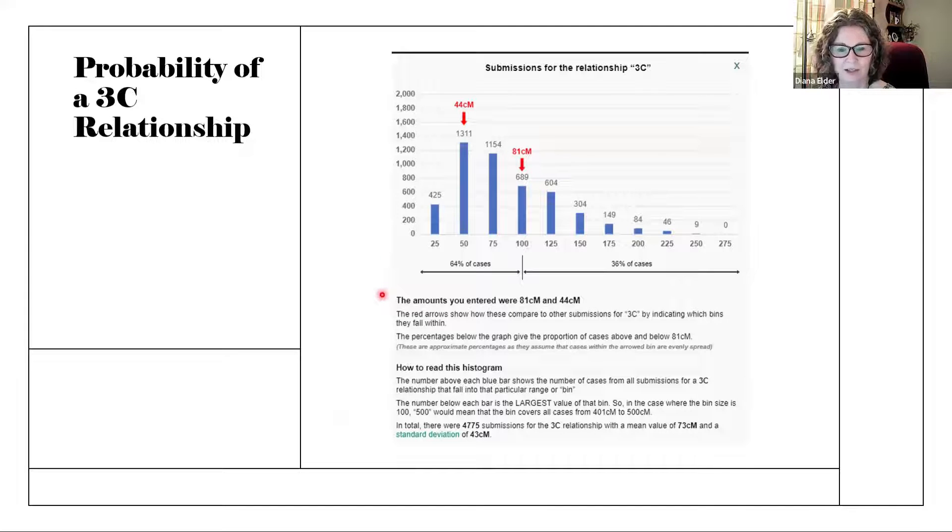It says here, the amounts you entered were 81 centimorgans and 44. And the red arrows show how these compare to other submissions for third cousin by indicating which bins they fall within. So each one of these is a bin. For instance, 0 to 25 would be shown here. 25 to 50 is shown here. 50 to 75 is here. 75 to 100 is here. And so forth. And so that is how all of the different submissions have been just put into a bin, whether they fall within this range. And so we can see that this 44 is actually the highest amount and that the 81 centimorgans, there were fewer people. But it's still pretty high.